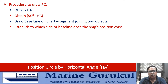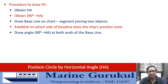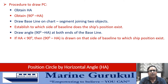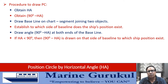It is one of the most important parts of this process to establish which side of the baseline the vessel exists. Draw the angle of 90 minus the horizontal angle at both ends of the baseline. If the horizontal angle is less than 90 degrees, this angle is to be drawn on the side of the baseline to which the ship's position exists.